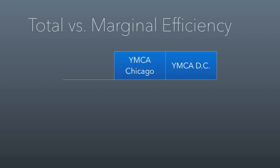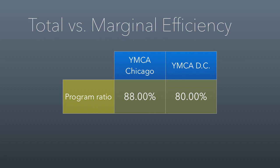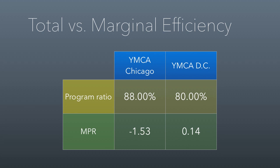Looking at an example, we've got the YMCA Chicago and the YMCA of D.C. If you look just at program ratios, YMCA Chicago is more efficient with an 88% program ratio versus YMCA D.C., which only has an 80% program ratio. As a donor, all else being equal, you'd probably give your money to YMCA Chicago. But when you look at their marginal program ratio, what you see is that if you give more money to YMCA Chicago, they're going to spend an increasing amount on administrative costs, whereas YMCA D.C. will be increasing their program costs instead — which is where you prefer your money going as a donor. I'm curious to know which one you guys would donate to under this circumstance.